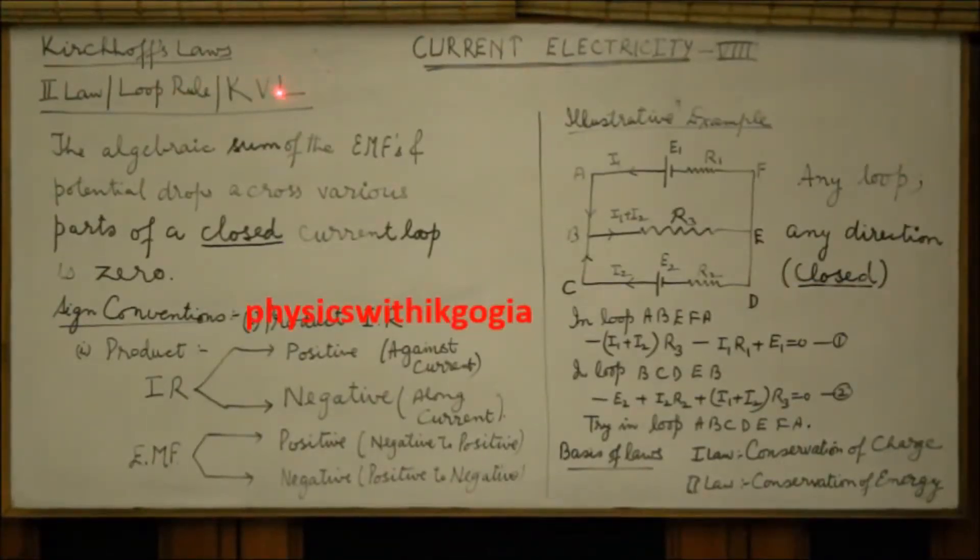Continuing with Kirchhoff's law, the second law is also known as loop rule or Kirchhoff's voltage law. It states that the algebraic sum of the EMFs and potential drops across various parts of a closed current loop is zero. The loop should be closed.